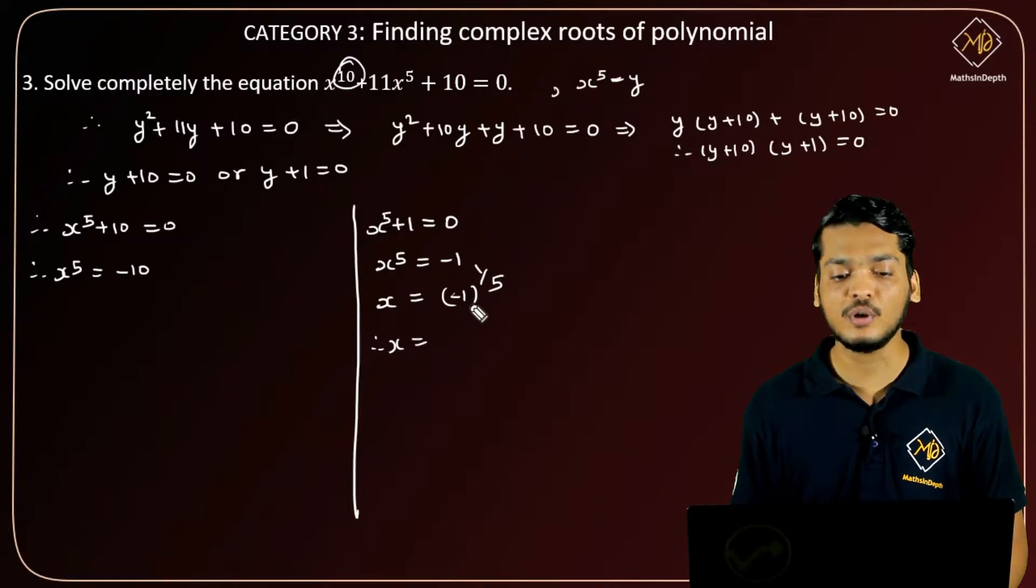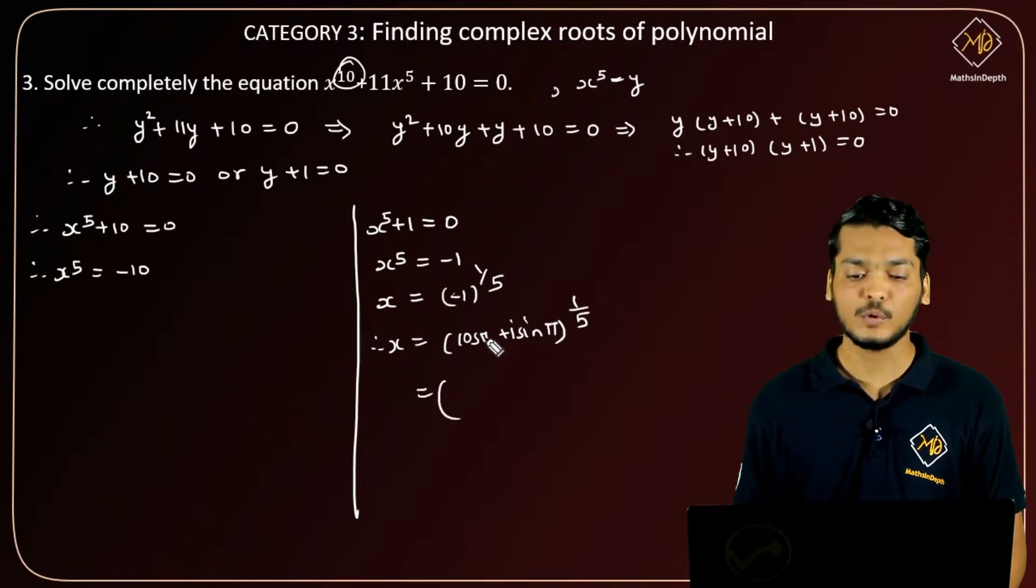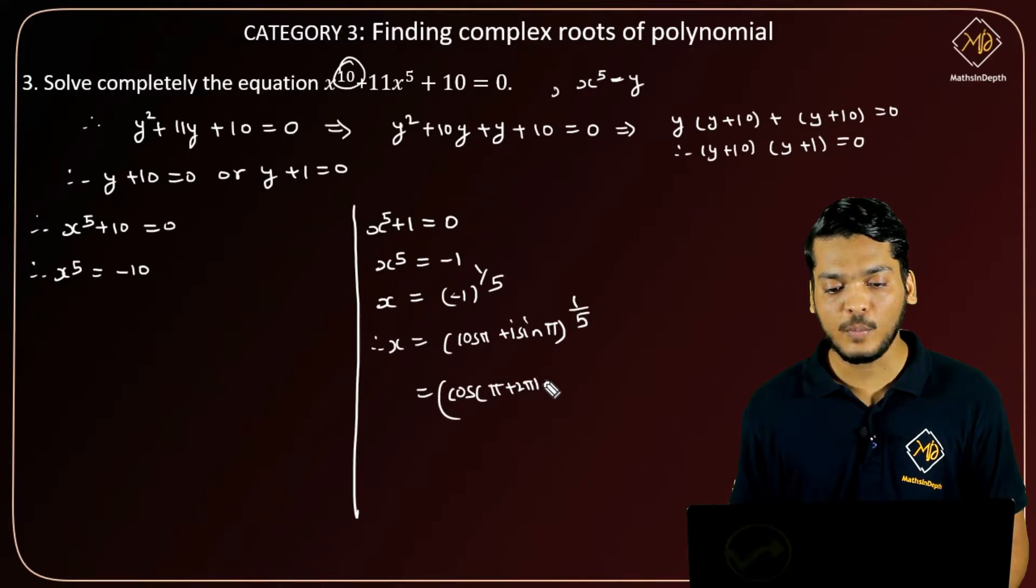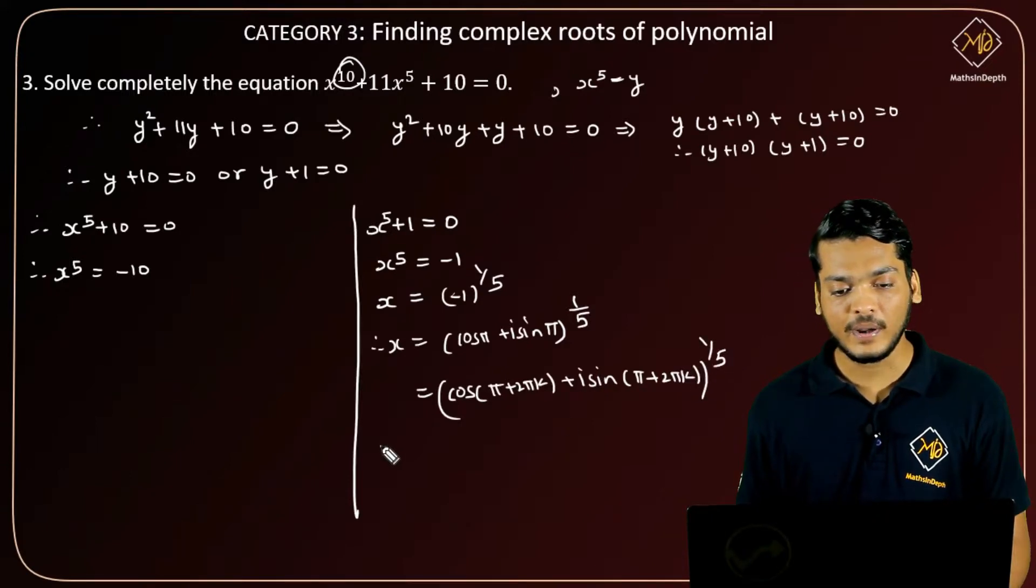So x = (cos π + i sin π)^(1/5). Now we are going to add 2πk to the angle, so this can also be written as (cos(π + 2πk) + i sin(π + 2πk))^(1/5).